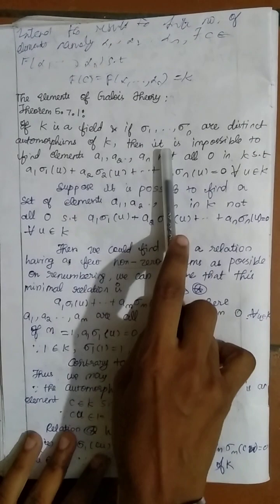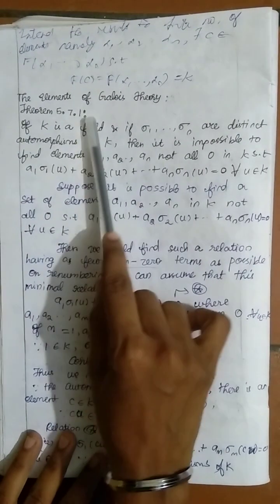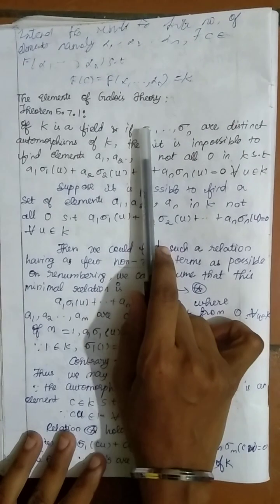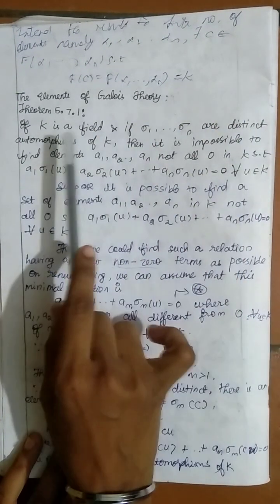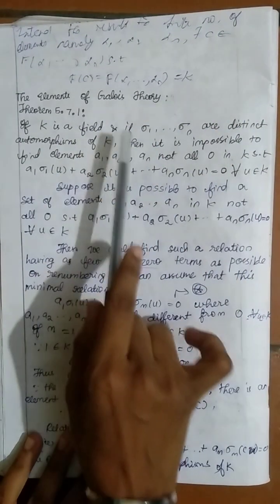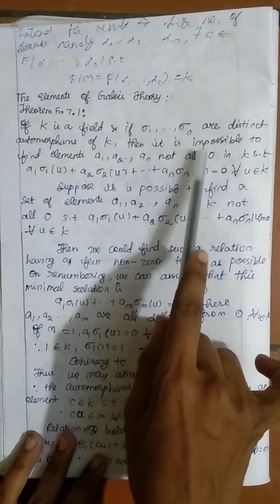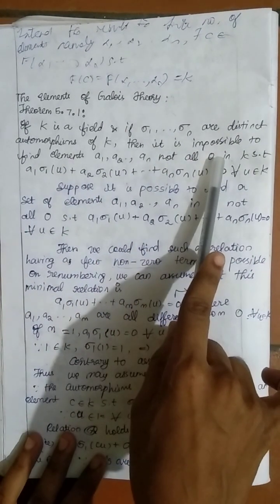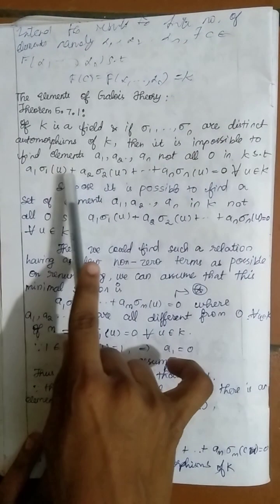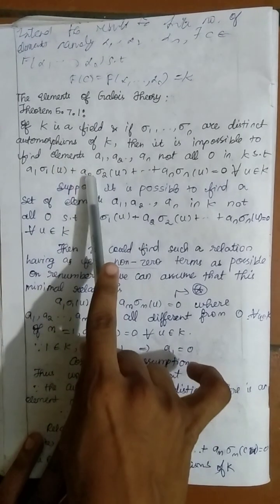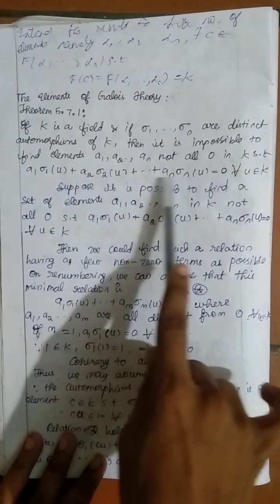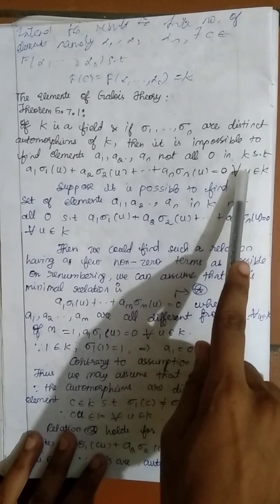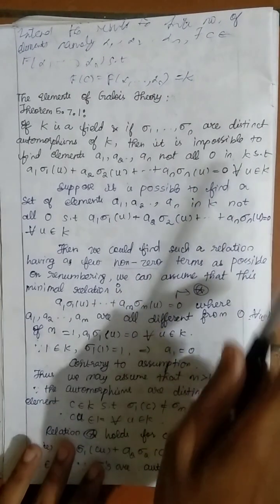Now we are going to see an important theorem in the elements of Galois theory. If k is a field and if sigma 1, sigma 2, ..., sigma n are distinct automorphisms of k, then it is impossible to find elements a1, a2, ..., an — not all zero — in k such that a1·sigma_1(u) + a2·sigma_2(u) + ... + an·sigma_n(u) = 0 for all u belonging to k.